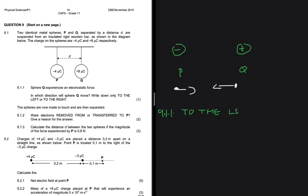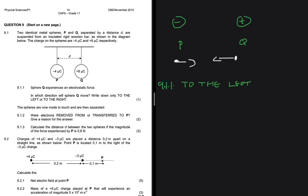Now let's do 9.1.2: the spheres are made to touch and then separated. The question asks where electrons are removed from or transferred to for sphere P. Sphere P has a negative charge and sphere Q is positively charged. From grade 7, you know about diffusion — substances move from a region of high concentration to low concentration. Sphere P has more electrons compared to sphere Q.